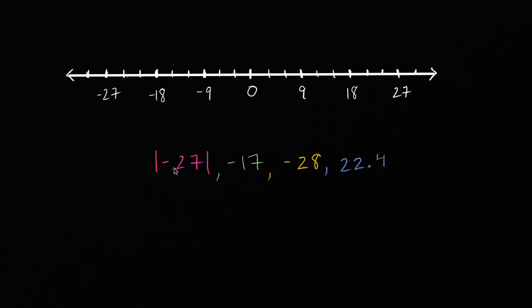So let's first think about the absolute value of negative 27. What is the absolute value of negative 27? Well, it's just going to be positive 27. This is the same thing as positive 27 because negative 27 is 27 to the left of zero. So let's plot the absolute value of negative 27. Well, it's really 27, so it's going to be right over here. So that is the absolute value of negative 27. It is positive 27.